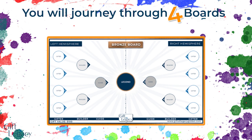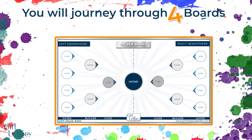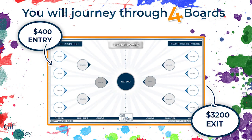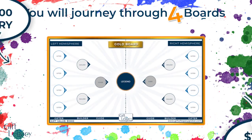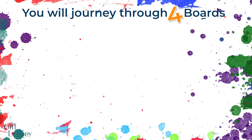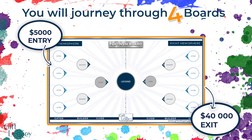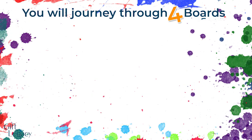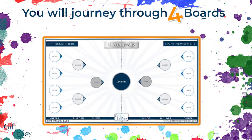You will journey through four boards, starting at the Bronze board where you enter with a $100 gift and exit with $800. You then journey to the $400 Silver board where you exit with $3,200. The $1,600 Gold board where you exit with $12,800. And finally the Platinum board at $5,000 where you exit with $40,000. This repeats over and over again on the Gift of Legacy perpetual system.